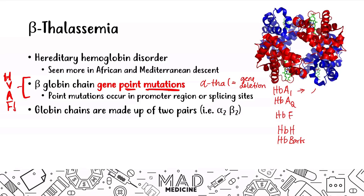In hemoglobin A1, you're going to have two alpha chains and two beta chains. Hemoglobin A2, you're going to have two alpha chains and two delta chains. Hemoglobin F, you're going to have two alpha chains and two gamma chains. In hemoglobin H, you're going to have three gene deletions, so you're going to have only one alpha gene available, leading to a primarily beta chain hemoglobin — a beta 4.